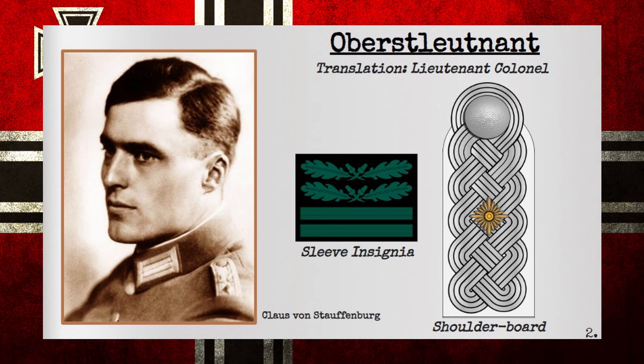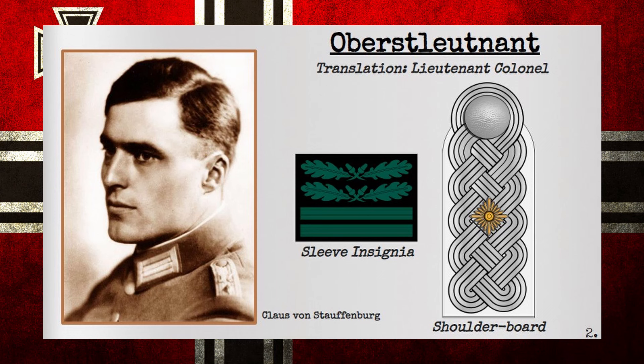The rank of Oberstleutnant, or Lieutenant Colonel in English, had regimental or battalion command as its most common field command role, and it may also hold a staff office, thus giving the rank command of around 400 to 1,000 men. The rank insignia consisted of a similar insignia but with only one golden pip. The rank of Major was the lowest of the staff officer ranks. Usually a battalion commander, it was the most common field commanding role for the rank, with command of around 400 to 600 men. The rank insignia consisted of a blank braided silver shoulder board.